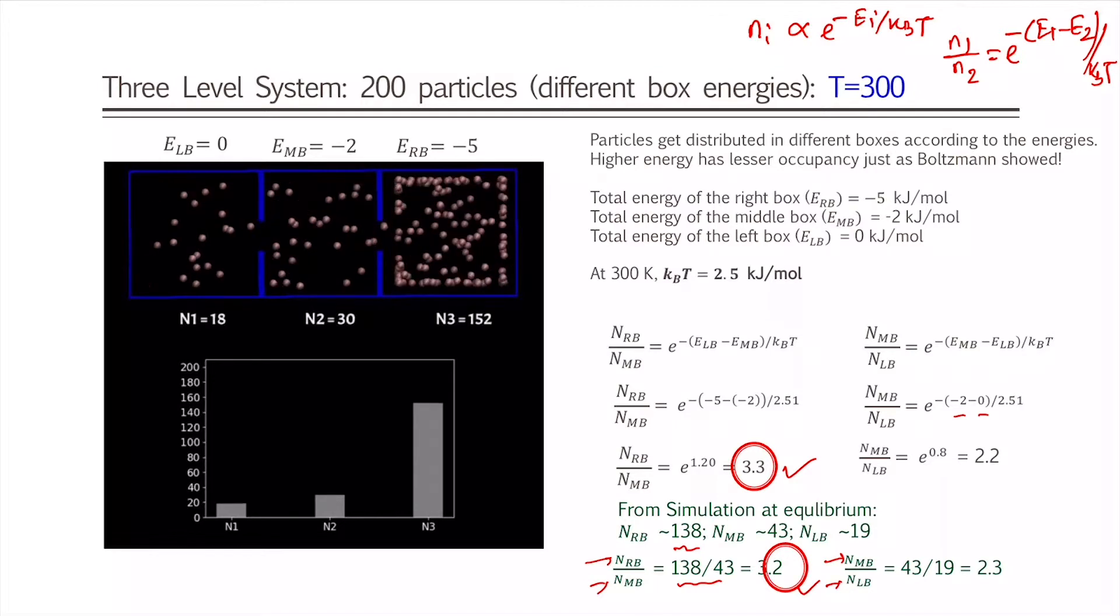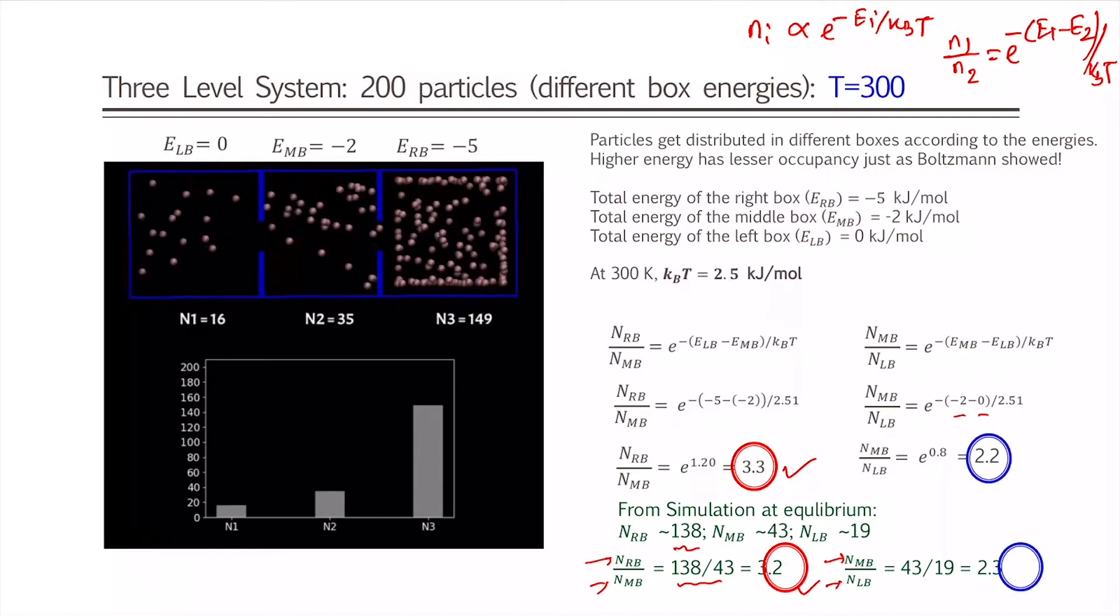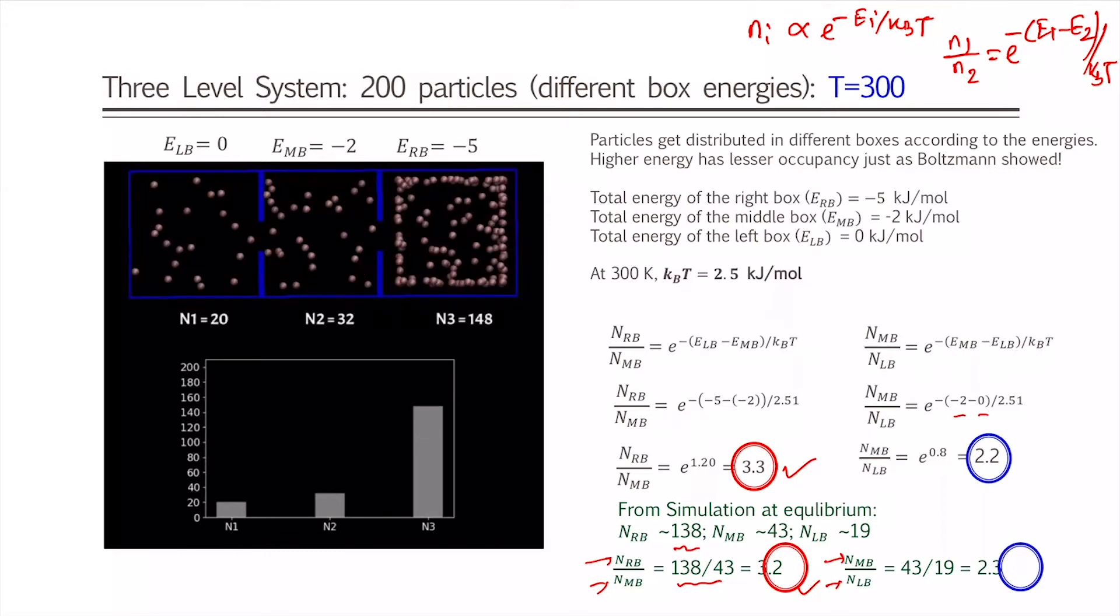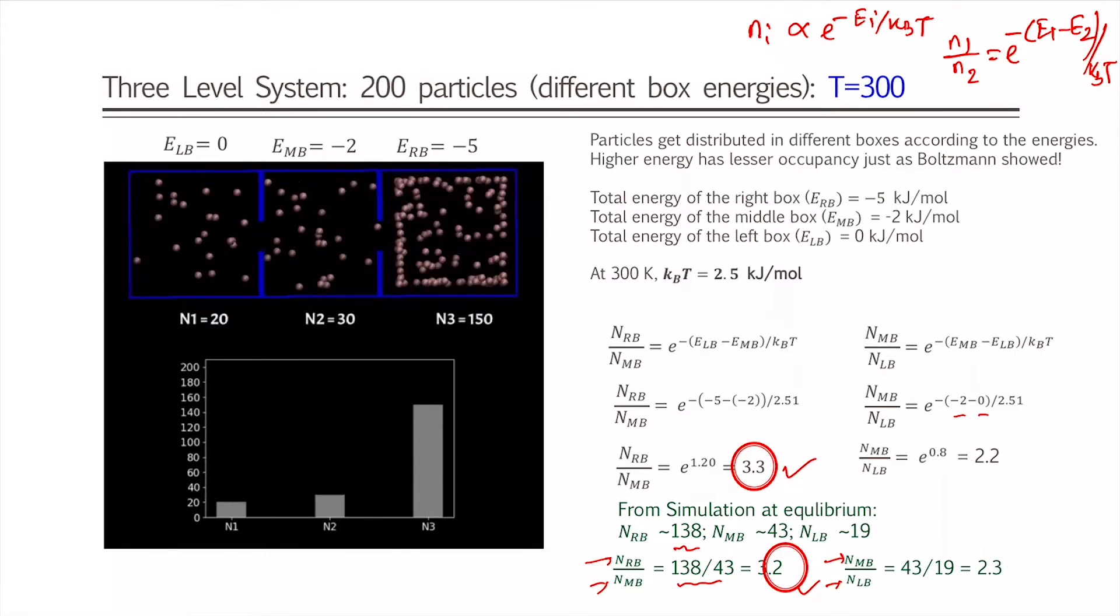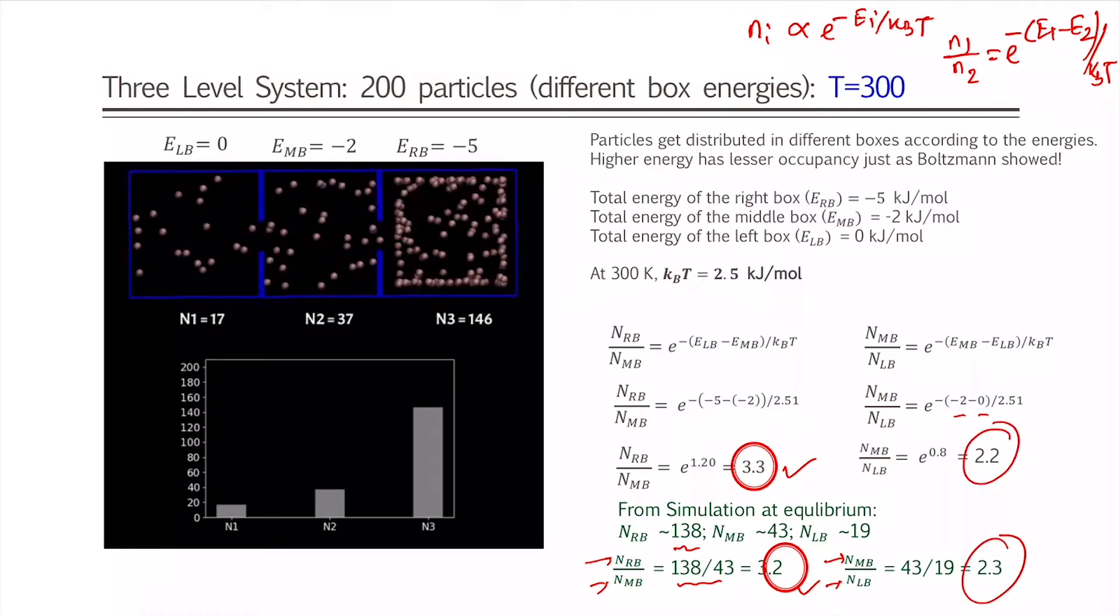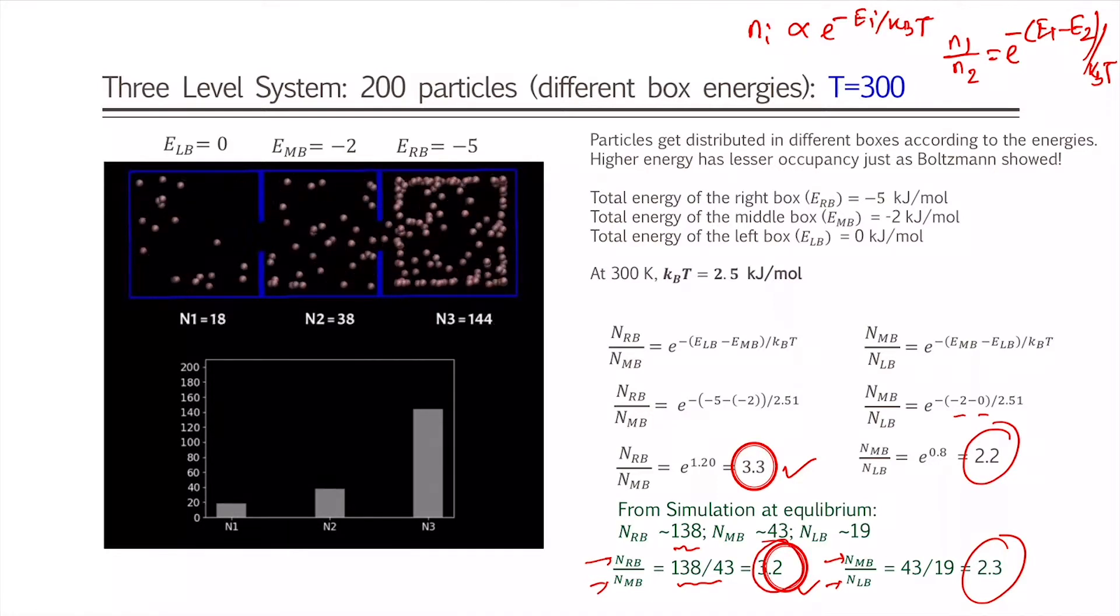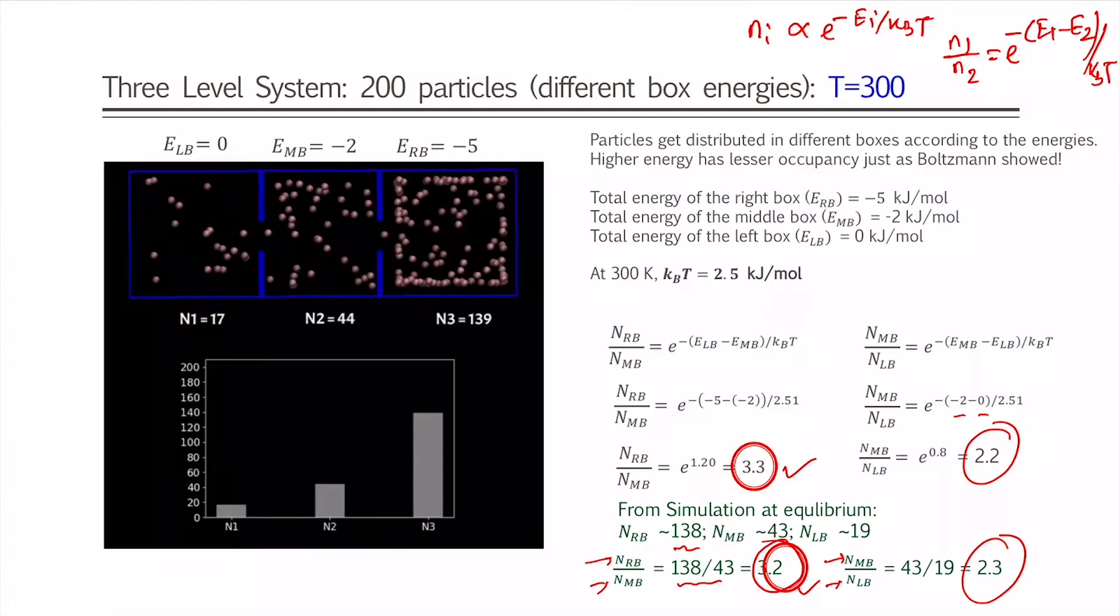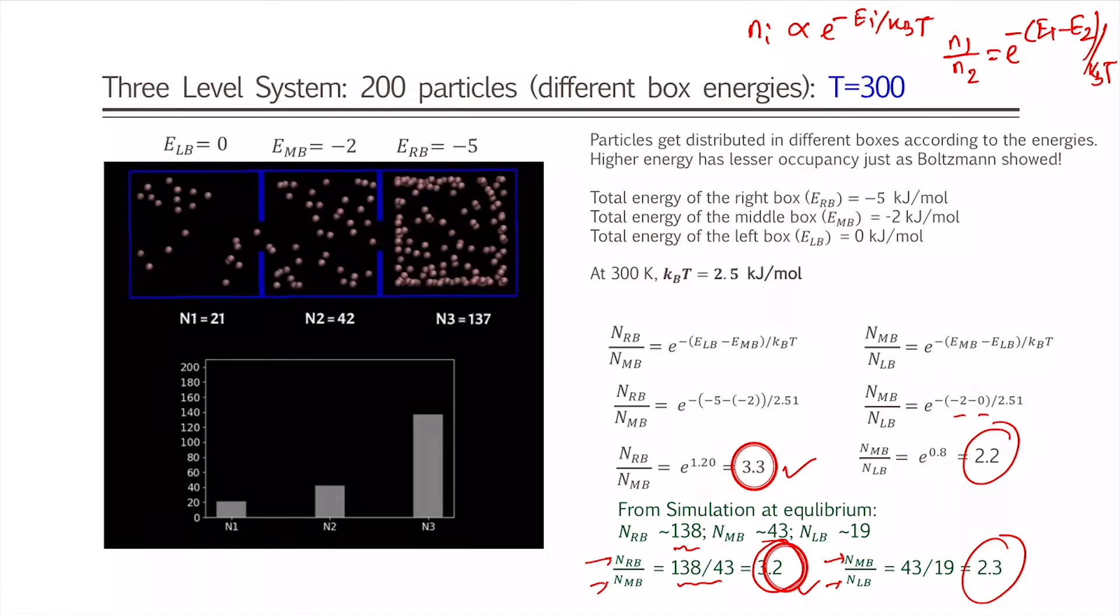So this is just from the simulations and this is what we expect from the Boltzmann distributions based on the energy of individual boxes. You see remarkably these values 3.3 and 3.2 are very very close, and 2.2 and 2.3 are also very very close. What I demonstrate here is that when there will be different energies, then the particles will occupy according to Boltzmann distributions if it has the distinguishable properties, which the classical particles we know have distinguishable properties, and therefore it is following that particular distribution.